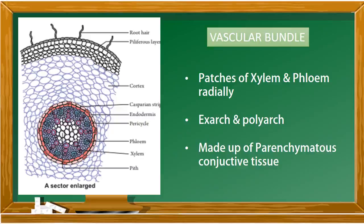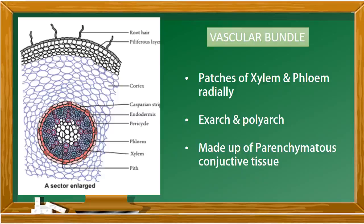As we studied, root anatomy has three types of tissue: epidermis, ground tissue, and vascular tissue. We have now come to the last type — vascular bundle. Vascular tissue has two types of complex tissues: xylem and phloem. Xylem conducts water and phloem conducts food, and the region where these two types of tissue are found is the vascular bundle region.